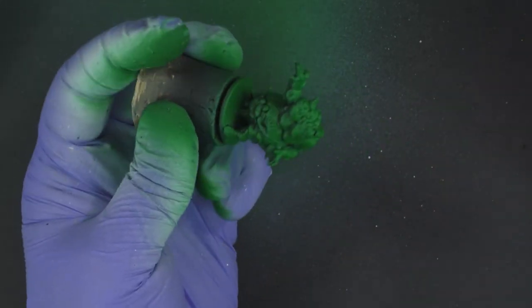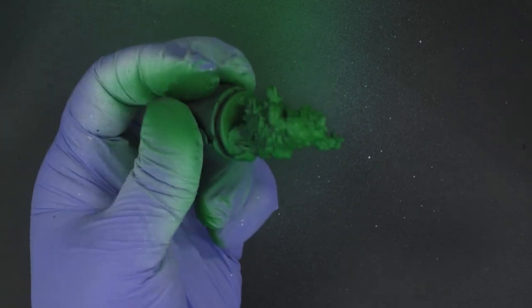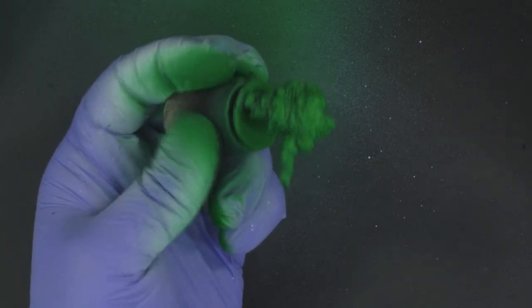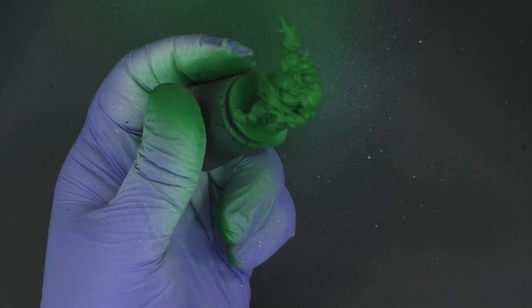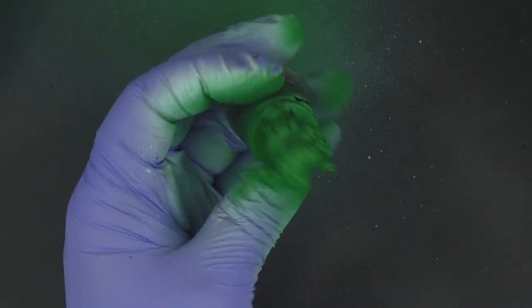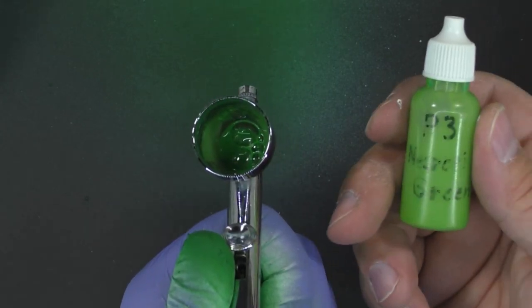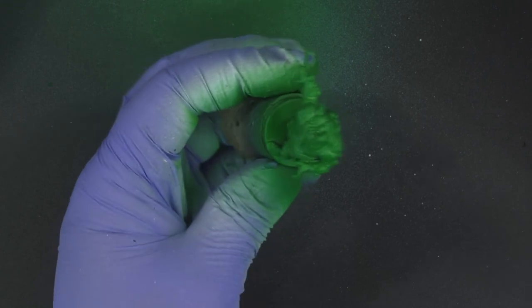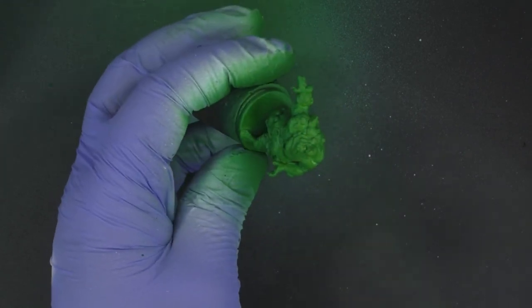For this next coat, we're going to spray this mostly from the top at a 45 degree angle, just catching the raised surfaces. Again, real small bursts, not a lot of paint. And now finally we're going to add some necrotite green into the iosin green and give ourselves a nice mix.